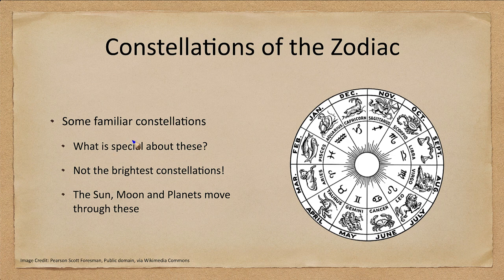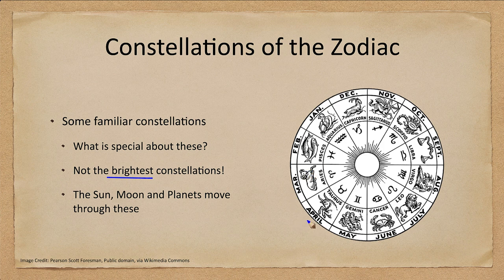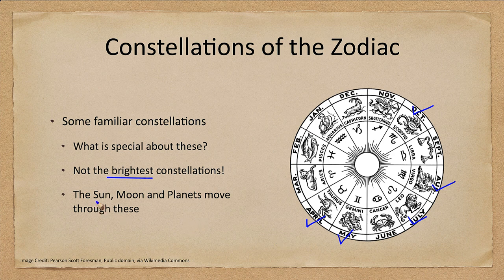You may be familiar with the constellations of the zodiac by name, but they are not very prominent constellations. Many of them do not have a really bright star within them. Some do — Taurus has a bright star, Gemini has a couple, Leo has a bright star, as does Virgo and Scorpius. So less than half of them actually have relatively bright stars in them.